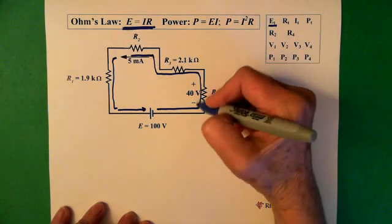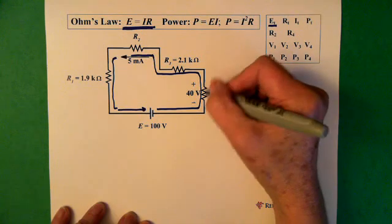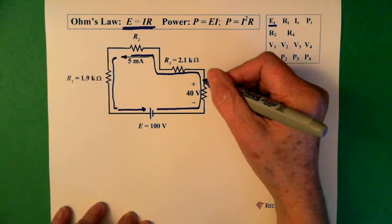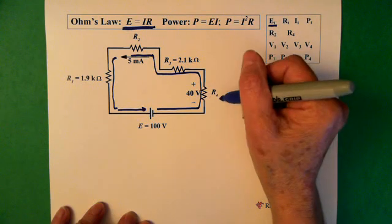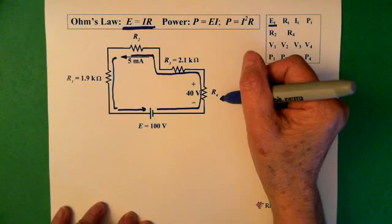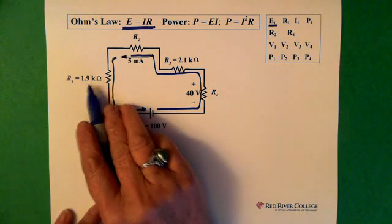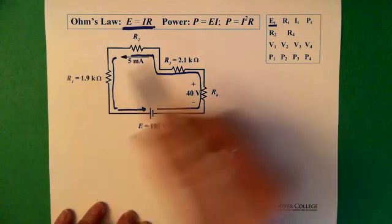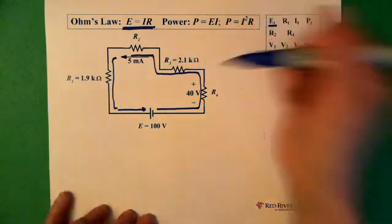And the voltage drop across here, there's also a current going through that resistor, we know it's 5 milliamps. So here we have voltage, we also have current, so we can solve for resistance. Here we have current and we have resistance, so we can solve for voltage. And the same here. So little by little we can work our way through this circuit.